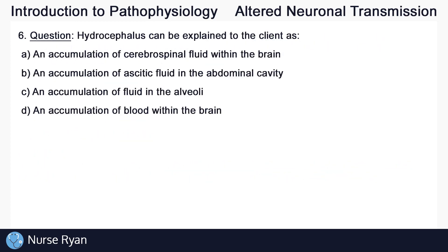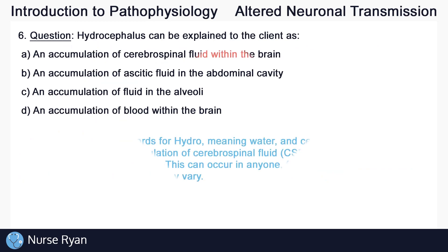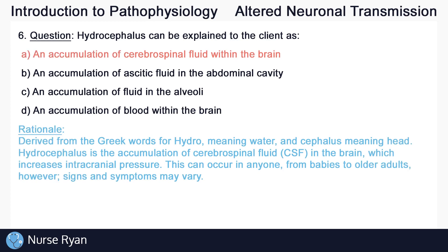Question number six: hydrocephalus can be explained to the client as? The correct answer here is A — an accumulation of cerebrospinal fluid within the brain. Derived from the Greek words for hydro meaning water and cephalus meaning head, hydrocephalus is the accumulation of cerebrospinal fluid in the brain which increases intracranial pressure. This can occur in anyone from babies to older adults, however signs and symptoms vary.